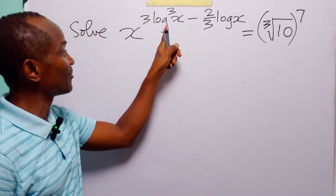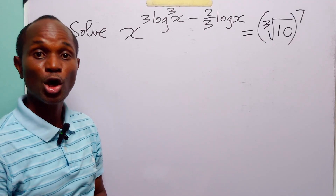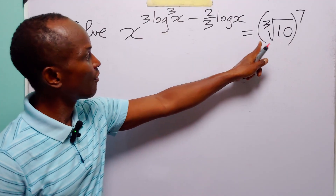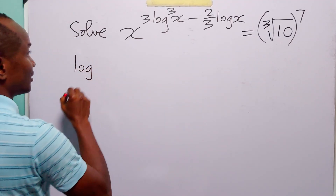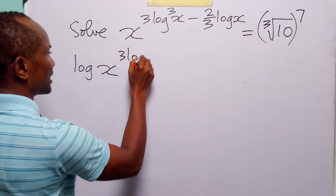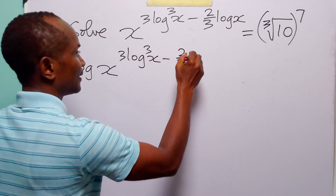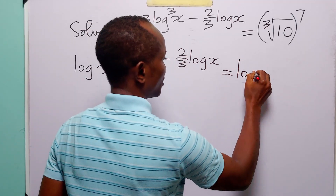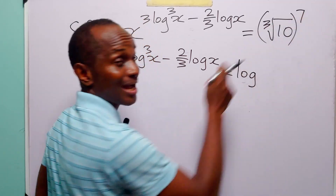Remember that when we write log without specifying the base, it means we are working in base 10 — common logarithms. So when we take log to base 10 of both sides of this equation, we have log x to the power 3, times log cube of x minus 2 over 3 times log x, is equal to log of the cube root of 10 to the power 7.